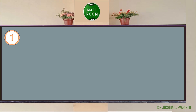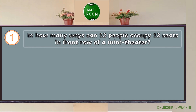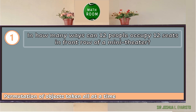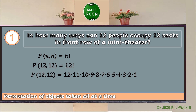Example number one: In how many ways can 12 people occupy 12 seats in the front row of a mini theater? This is an example of permutation of objects taken all at a time, so we use the formula P(n, n) = n factorial. By substitution, P(12, 12) = 12 factorial = 12 × 11 × 10 × 9 × 8 × 7 × 6 × 5 × 4 × 3 × 2 × 1 = 479,001,600. Therefore, there are 479,001,600 ways.